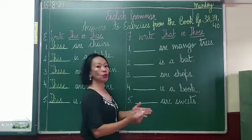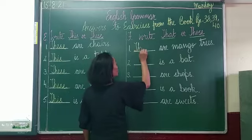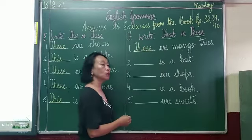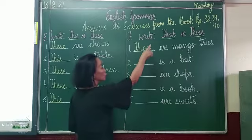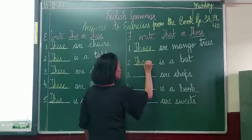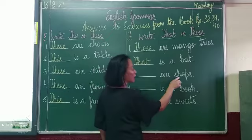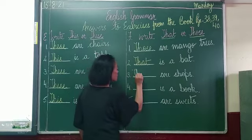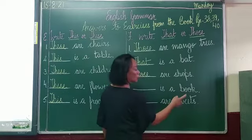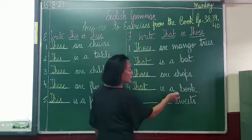Number one: 'dash are mango trees' — 'are' and 'mango trees' more than one, so 'those', capital T-H-O-S-E: those are mango trees. Number two: 'dash is a bat' — a bat means one, so 'that', capital T-H-A-T: that is a bat. Number three: 'dash are shops' — 'are' and 'shops' more than one, so 'those', T-H-O-S-E: those are shops. Number four: 'dash is a book' — a book means one, so 'that', T-H-A-T: that is a book.